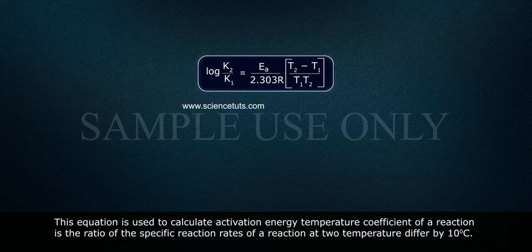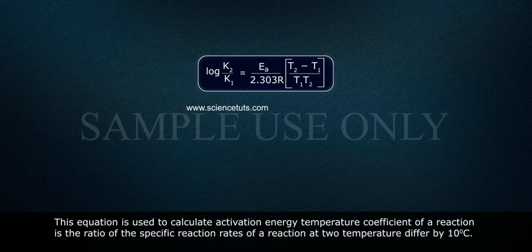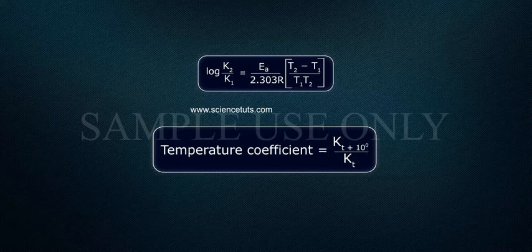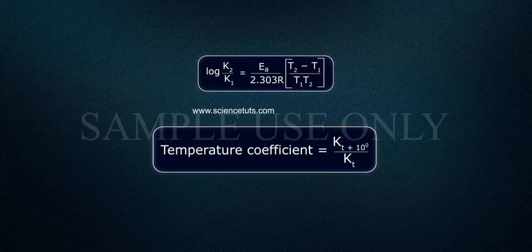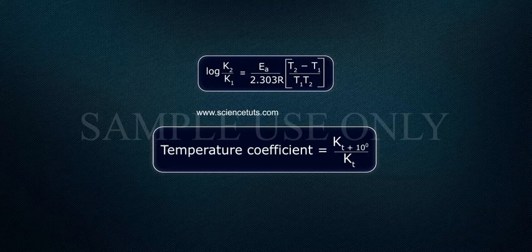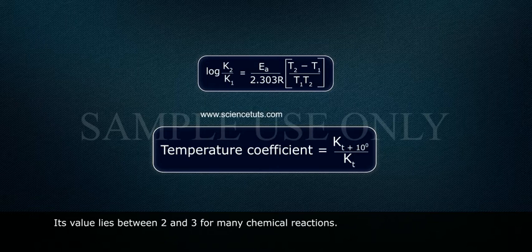Temperature coefficient equals K at T plus 10 degrees divided by K at T. Its value lies between 2 and 3 for many chemical reactions.